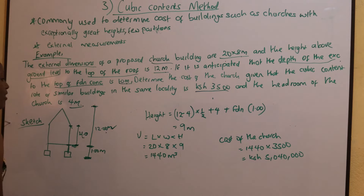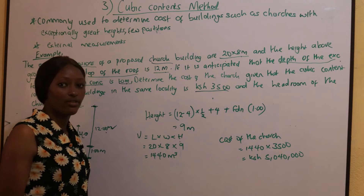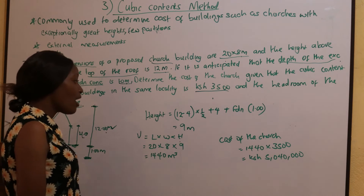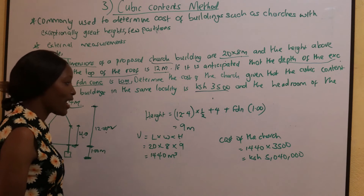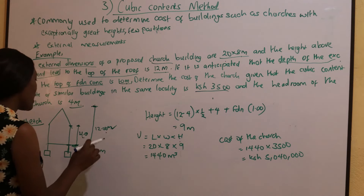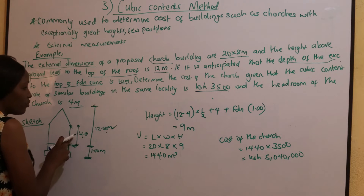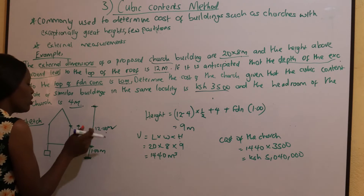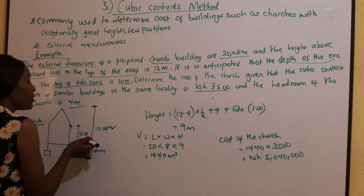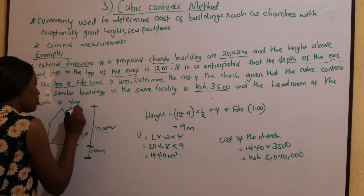How do we calculate the volume of this house? The volume is length times width times height. We have the length and the width, but we need to determine the height. The height is calculated by taking 12 meters from ground floor to top of roof, then deducting the headroom, and multiplying by a half to get half the roof height. So 12 minus 4 gives us 8. That 8 is from the top of the roof down to where the roof starts. For the roof, we take half of 8, which is 4. Then we add the headroom of 4, and the foundation depth of 1, giving us 9 meters.